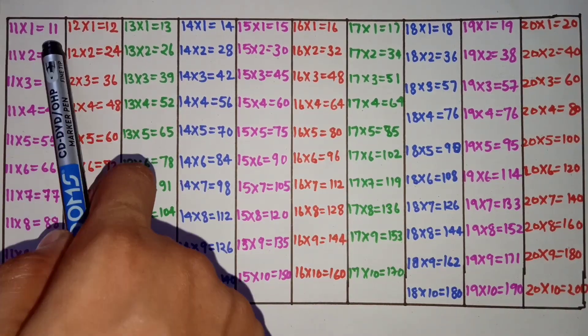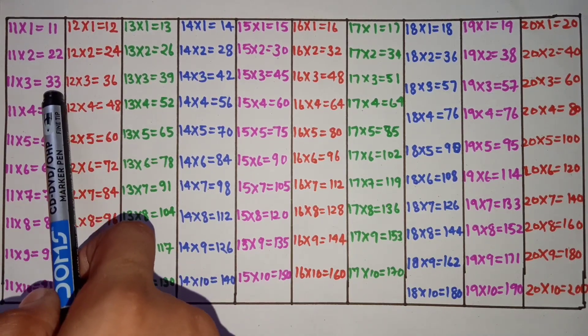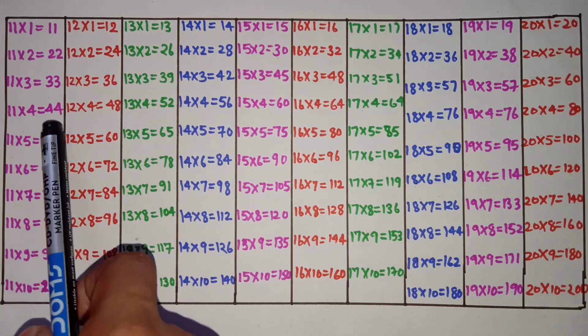11 ones are 11, 11 twos are 22, 11 threes are 33, 11 fours are 44.